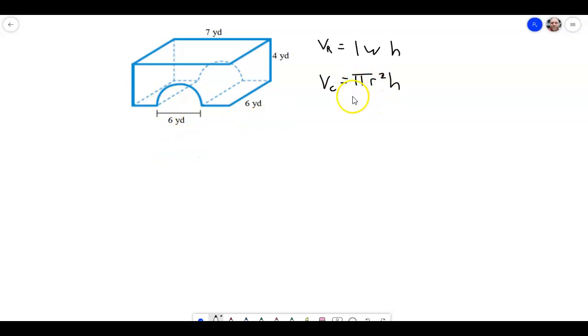And remember, we're going to end up dividing this by 2, because this is only half of the cylinder, so we're basically just going to take half of it. All right, so the complete volume is going to be V_r plus one half of our volume of our cylinder. So we can kind of set it up like that if we want to.